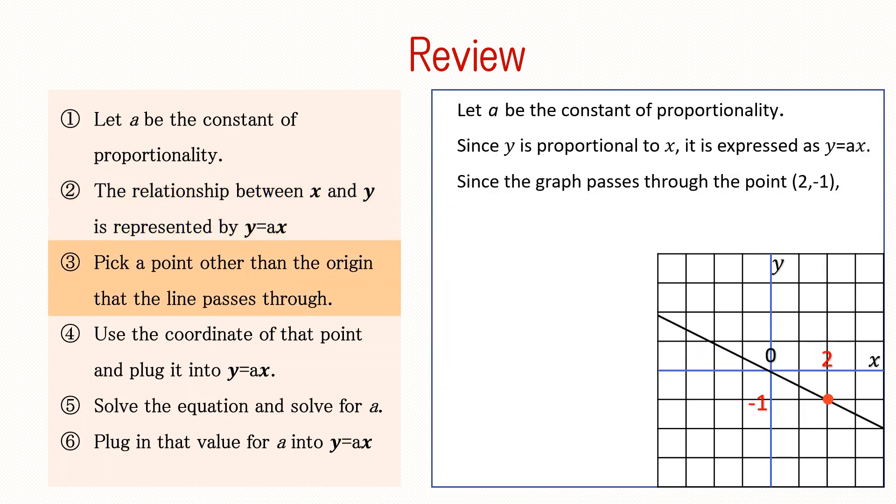Next, pick a point other than the origin that the line passes through. For this graph, we can choose the point 2, negative 1.